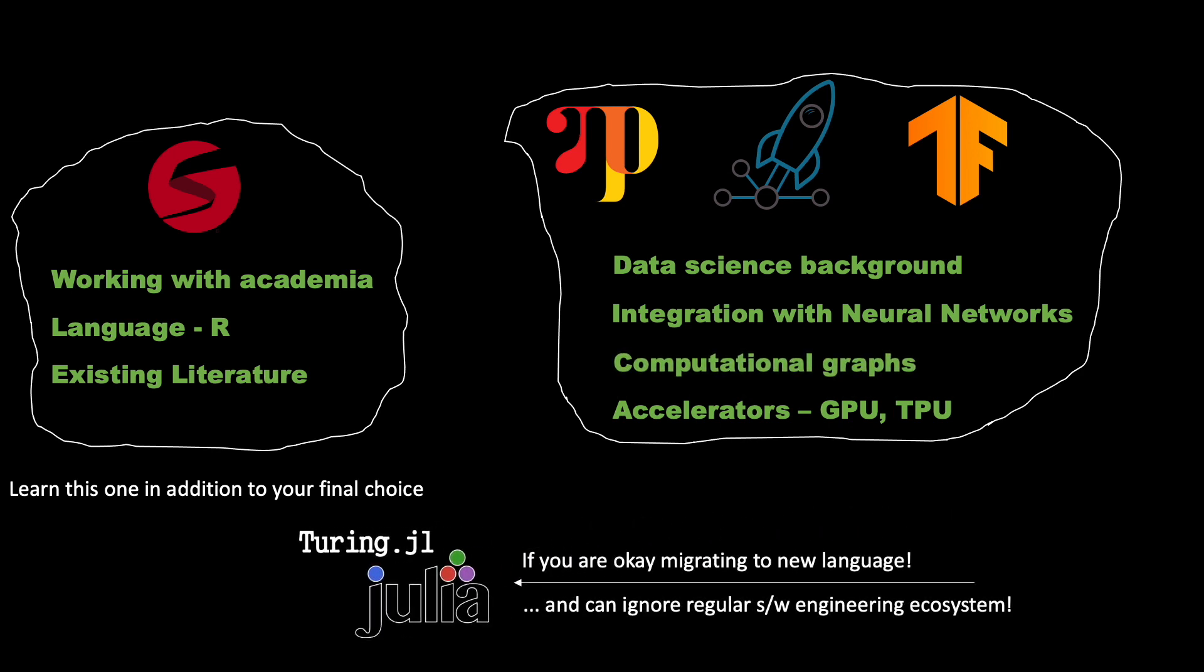And finally, Turing.jl is interesting if you are okay migrating to a new language. Now, love for programming languages is very subjective and personal and people form religions and cults around them. If you like Julia, then this may be a good choice Turing.jl. But I must also warn you that at present Julia does not offer a rich non-data science ecosystem. Even though Julia is a general purpose programming language, at least this is how it is presented, it does not yet have the same richness in terms of ecosystem of software engineering libraries as Python has.